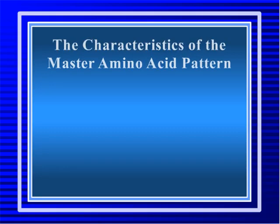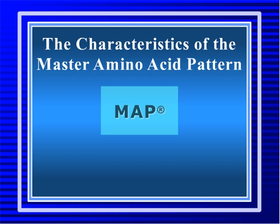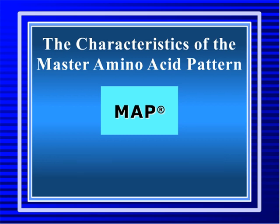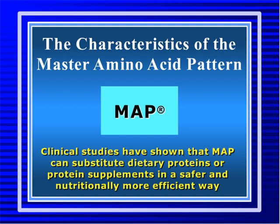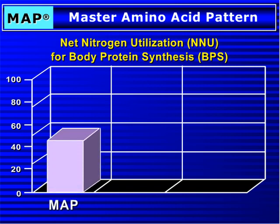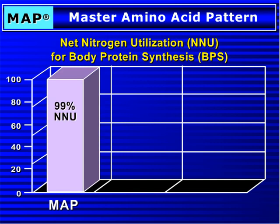The Characteristics of the Master Amino Acid Pattern, MAP. MAP is composed of a patented unique pattern of highly purified, free, crystalline essential amino acids. Clinical studies have shown that MAP can substitute dietary proteins or protein supplements in a safer and nutritionally more efficient way. MAP provides a 99% net nitrogen utilization, or NNU. This means that 99% of MAP's constituent amino acids act as precursors of body protein synthesis, or BPS, to become the body's constituent proteins.